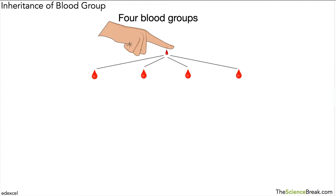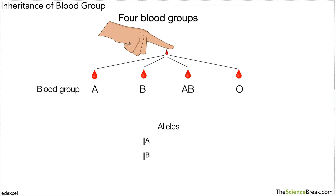There are basically four different blood groups: A, B, AB, and O. You might have a plus or minus next to each of those but that's not what we're looking at today. For blood group A we write an I with a capital A slightly raised. For B it's a capital I with a raised capital B. And for blood group O it's I with a capital O slightly raised.